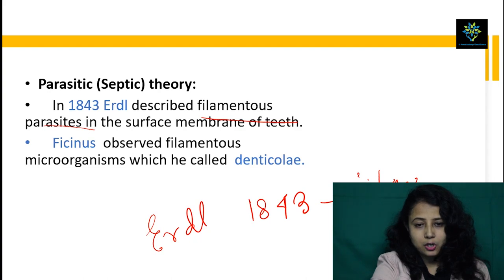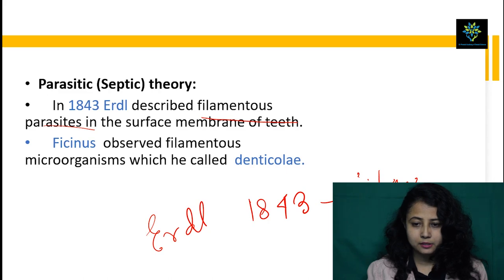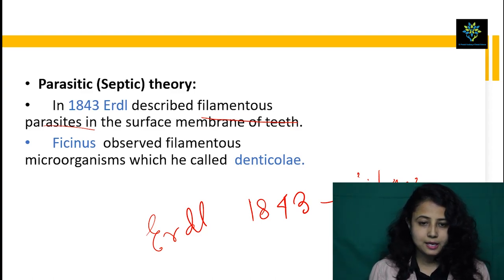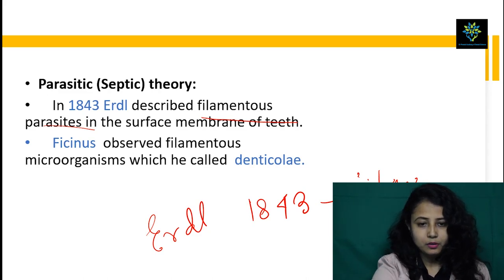Then comes the parasitic theory. It was given by Ardell in 1843, which describes filamental parasites. They described filamental parasites visible on the surface of the membrane of the teeth. Ficinas observed the filamentous microorganisms which are called denticoli.